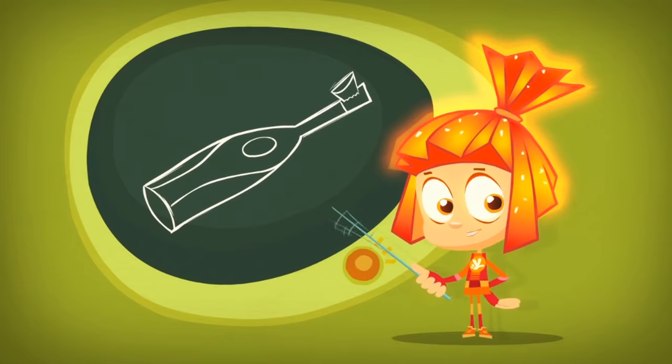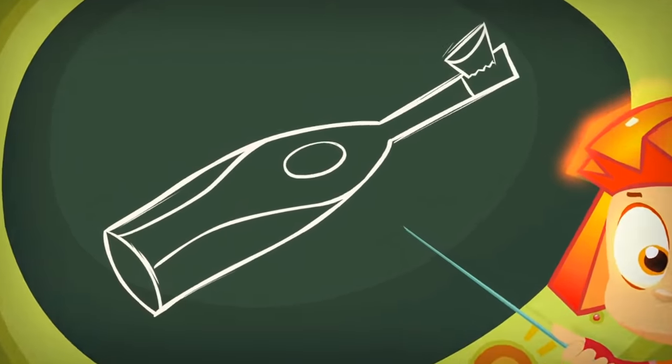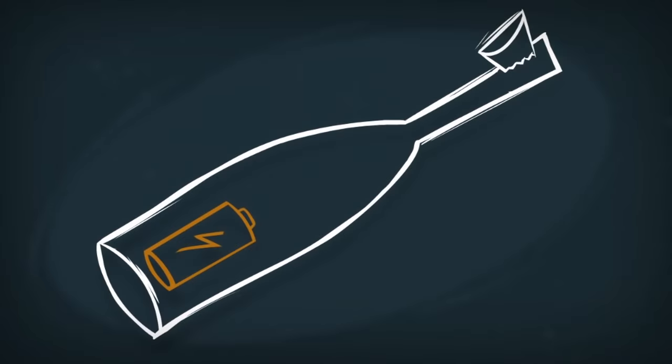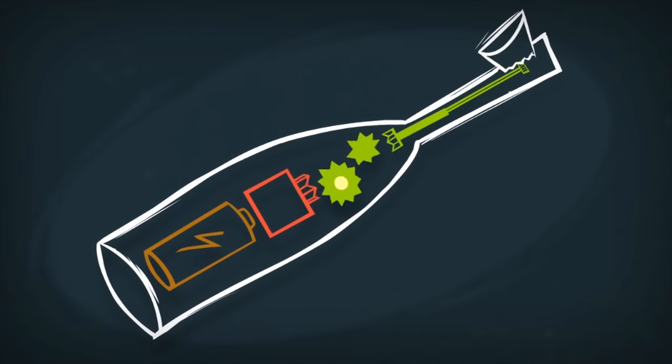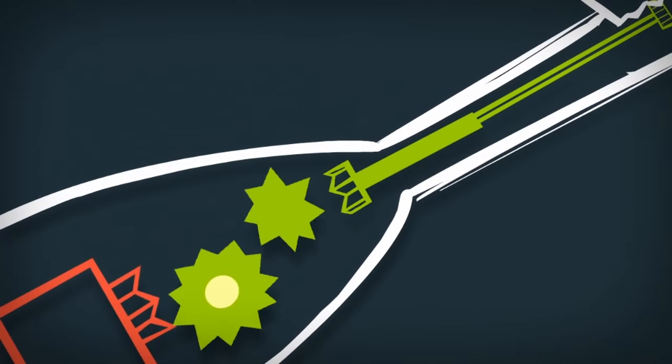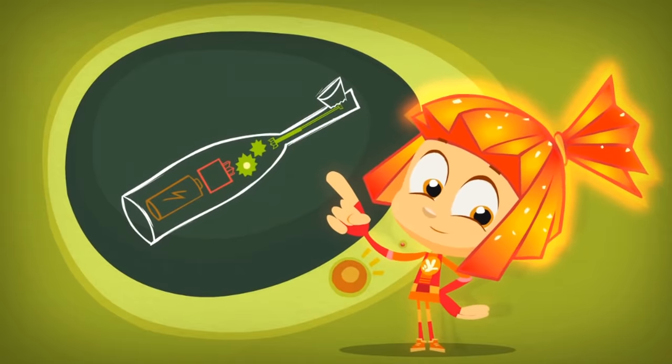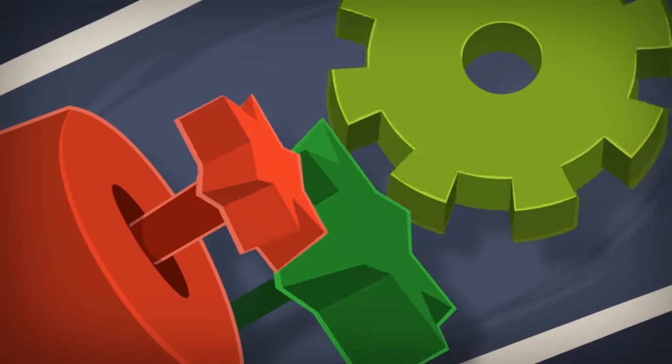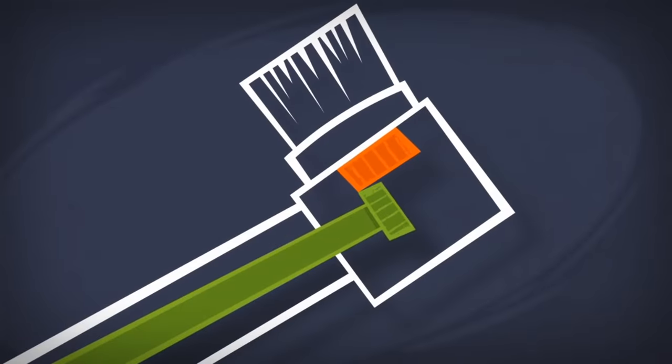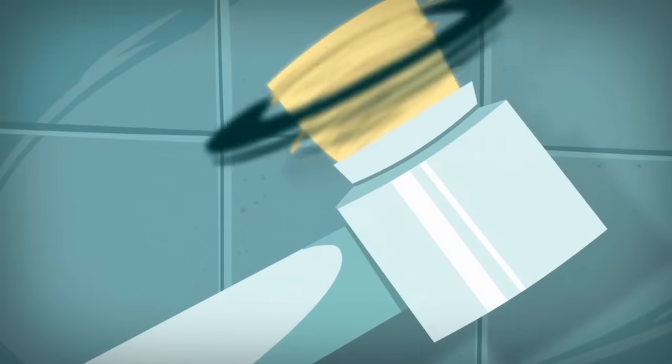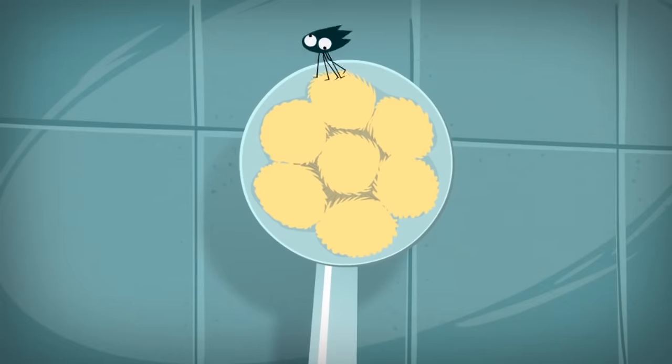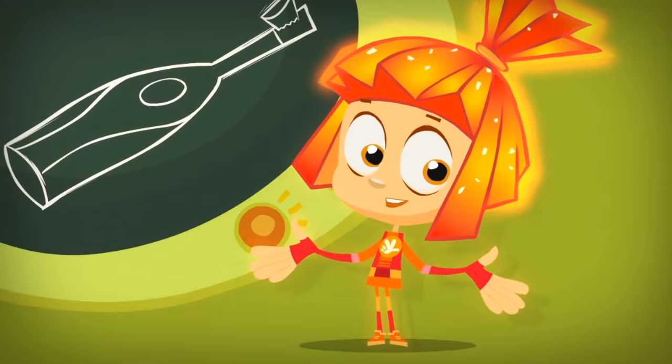An electric toothbrush is really simple as long as you know these three parts! The battery, the motor, and a very clever mechanism that connects the motor with the bristles! The whole secret to the toothbrush is right in there! That mechanism uses the spinning of the motor to make the bristles move very fast back and forth, from left to right, from right to left! And that's how it brushes your teeth!